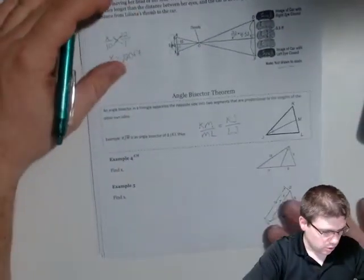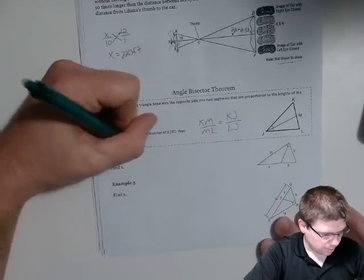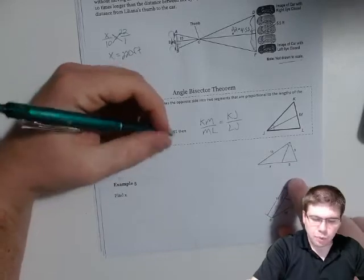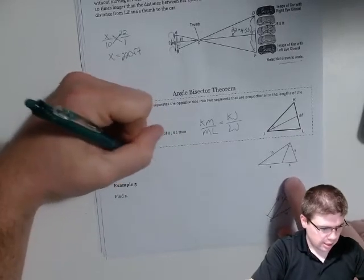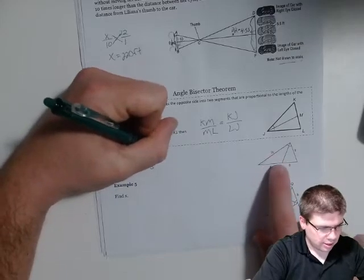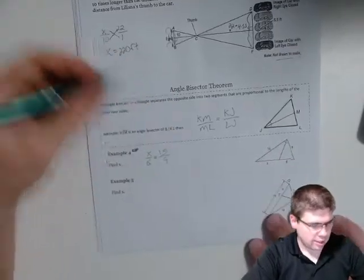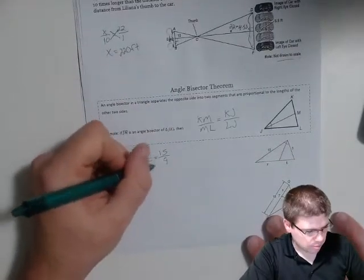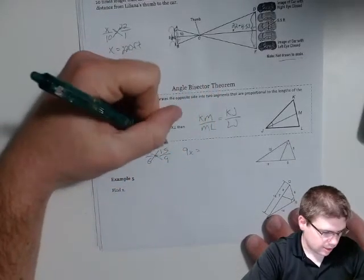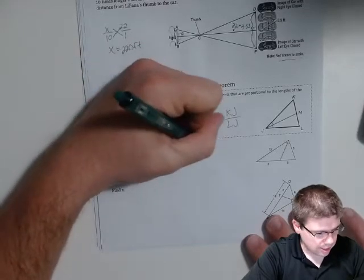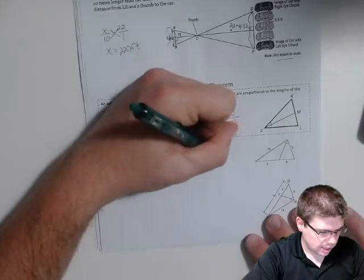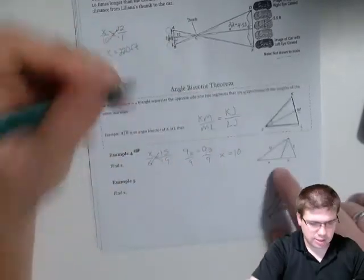So we can use that to find x in this case. We can say x over 6 is equal to 15 over 9. We could go ahead and cross multiply, and we get 9x equals 15 times 6 would be 90. And so we can divide by 9 and get that x is 10. That would give us that measurement.